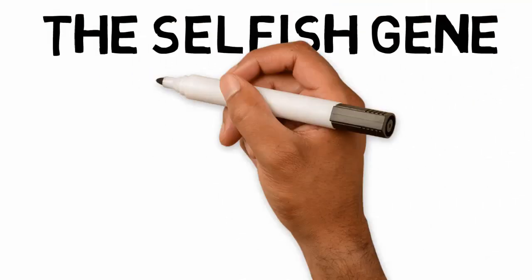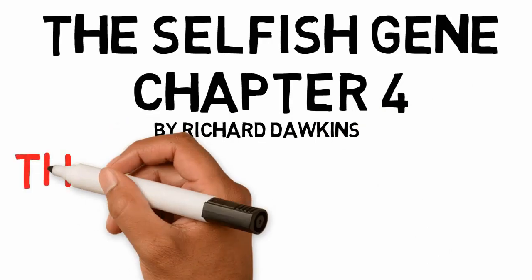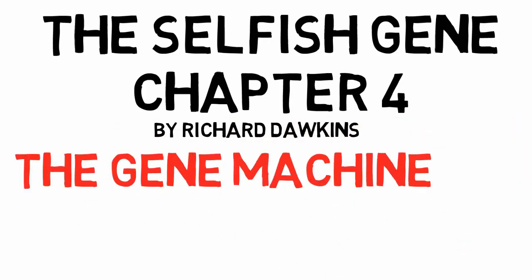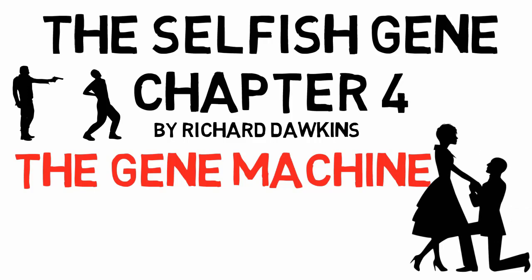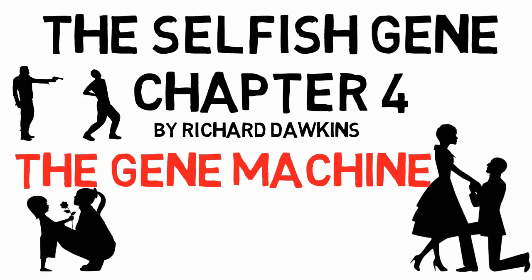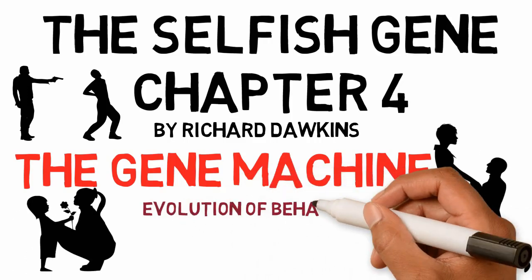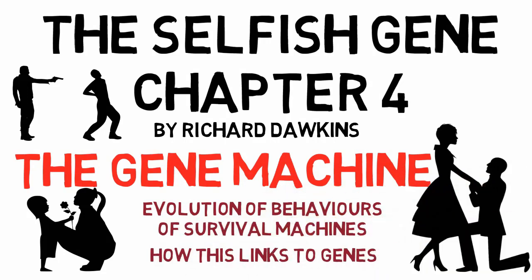The Selfish Gene Chapter 4 by Richard Dawkins: The Gene Machine. Having established the definition of what Dawkins means by genes in the previous chapter, Dawkins continues the story of evolution from the point he left off in chapter 2 and delves into the evolutionary behaviors within survival machines and its links to genes.